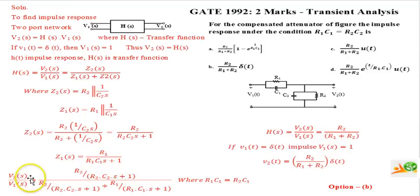This simplifies and Z1(s) simplifies to R1 over R1C1s plus 1. Once we know the values of Z2(s) and Z1(s), we can substitute in this relation. The condition given here is R1C1 equals R2C2. When we apply this condition, we simplify to get H(s) as V2(s) over V1(s) that is R2 over R1 plus R2.